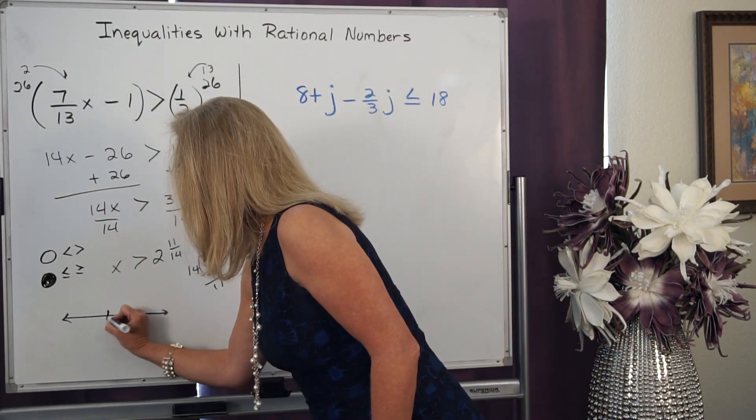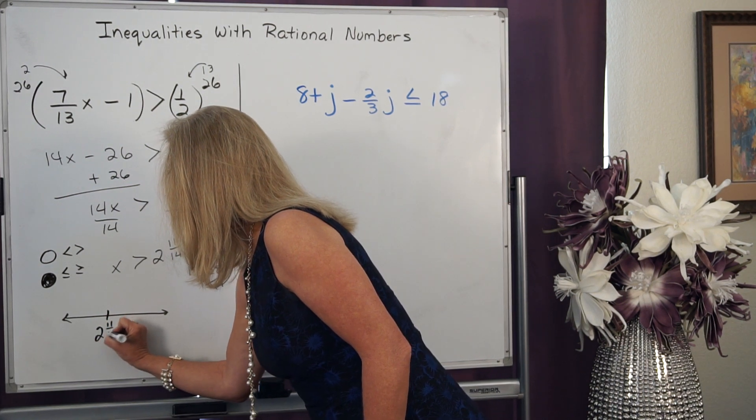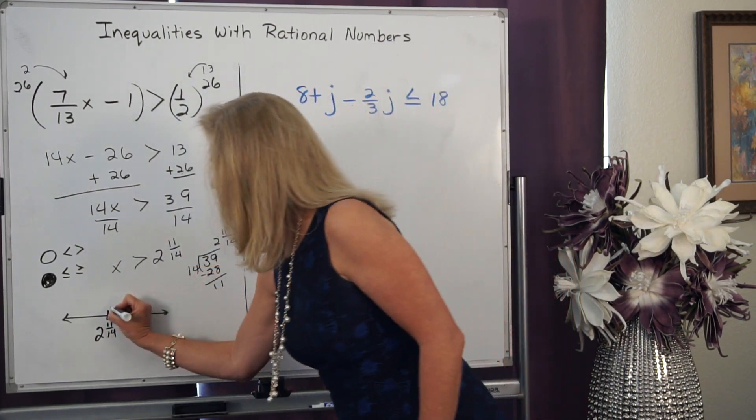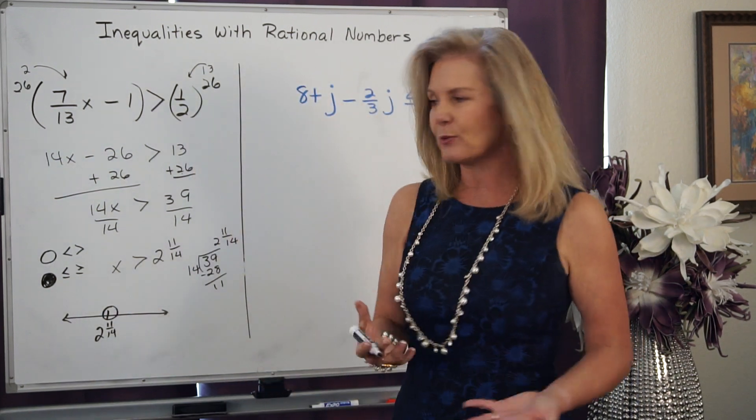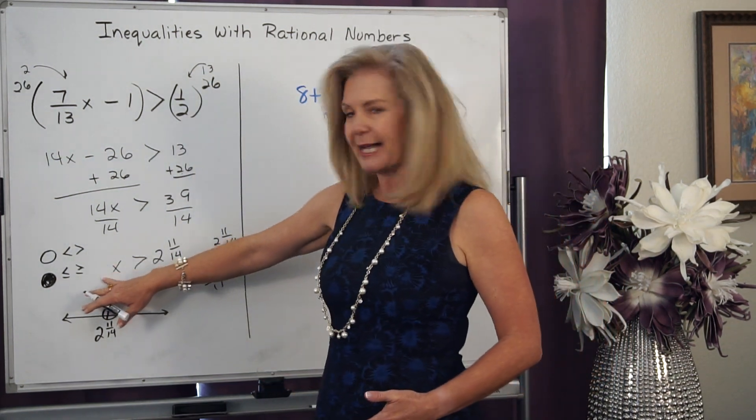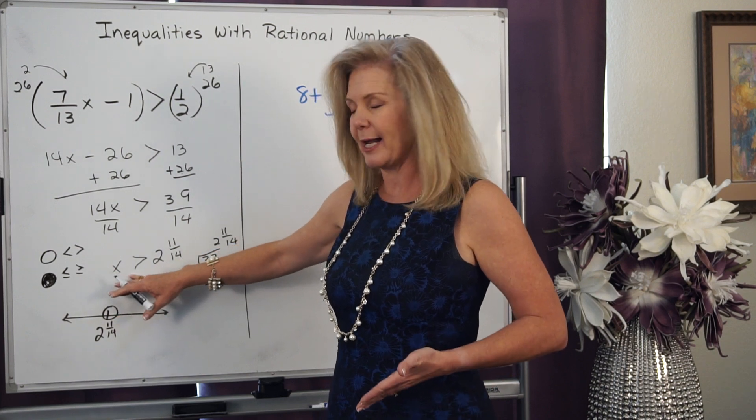So I'm going to take my 2 and 11/14. It's going to be an open circle because it's not equal to it. And I read from the side of the variable all numbers that are greater.